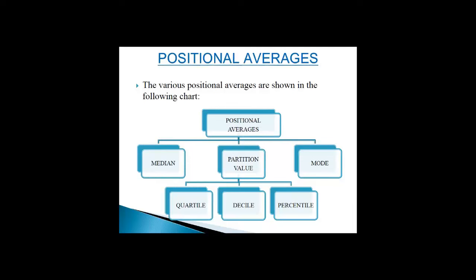Positional averages. In the previous chapter we discussed simple arithmetic mean and weighted mean, which are mathematical in nature. Such mathematical averages deal with characteristics of a data set that can be directly measured quantitatively. However, at times we need to measure qualitative characteristics of a distribution. In such cases, the other measures of central tendency are positional averages. Positional averages determine the position of a variable in the series and have nothing to do with the sum of the values. As a result, they are least affected by extreme items of the series.